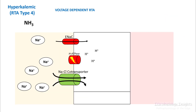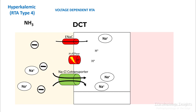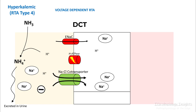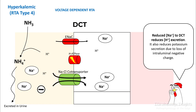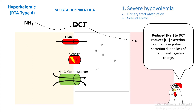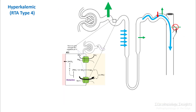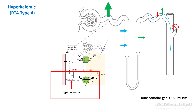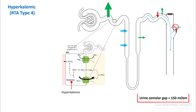The second type of hyperkalemic RTA is voltage-dependent RTA. Normally, a lot of sodium in the distal convoluted tubule generates a negative charge on the intraluminal side, aiding both hydrogen and potassium excretion, with hydrogen combining with ammonia to be excreted as ammonium ion. However, if you have reduced sodium delivery to your distal convoluted tubule, it reduces hydrogen and potassium excretion. This is commonly seen in severe hypovolemia, urinary tract obstruction, and sickle cell disease. Additionally, hyperkalemia inhibits ammonia synthesis, reducing ammonia secreted in the proximal convoluted tubule, so urinary osmolar gap is less than 150.